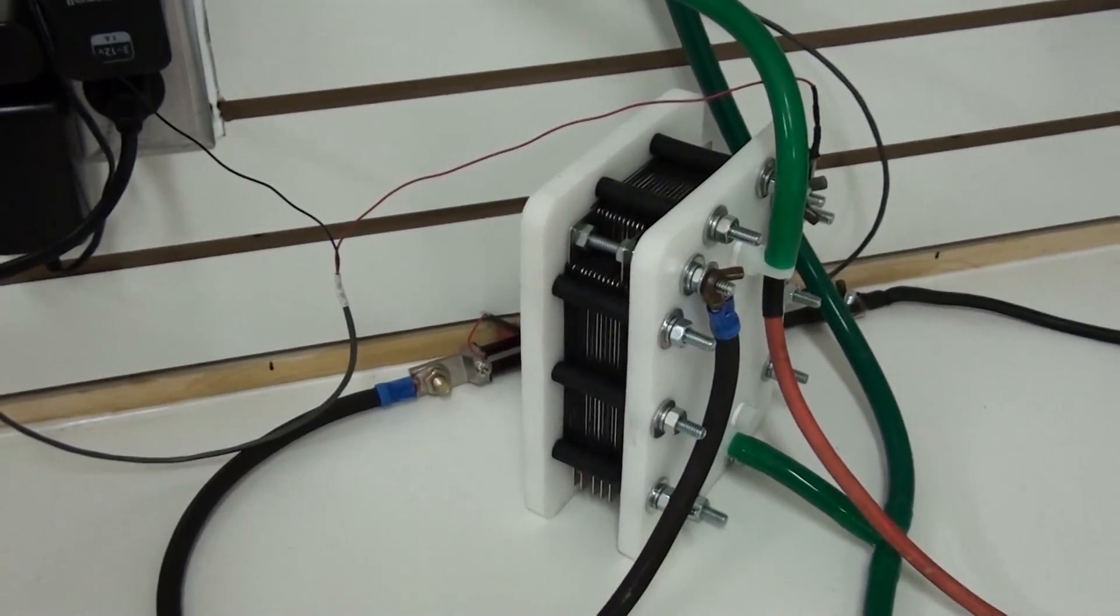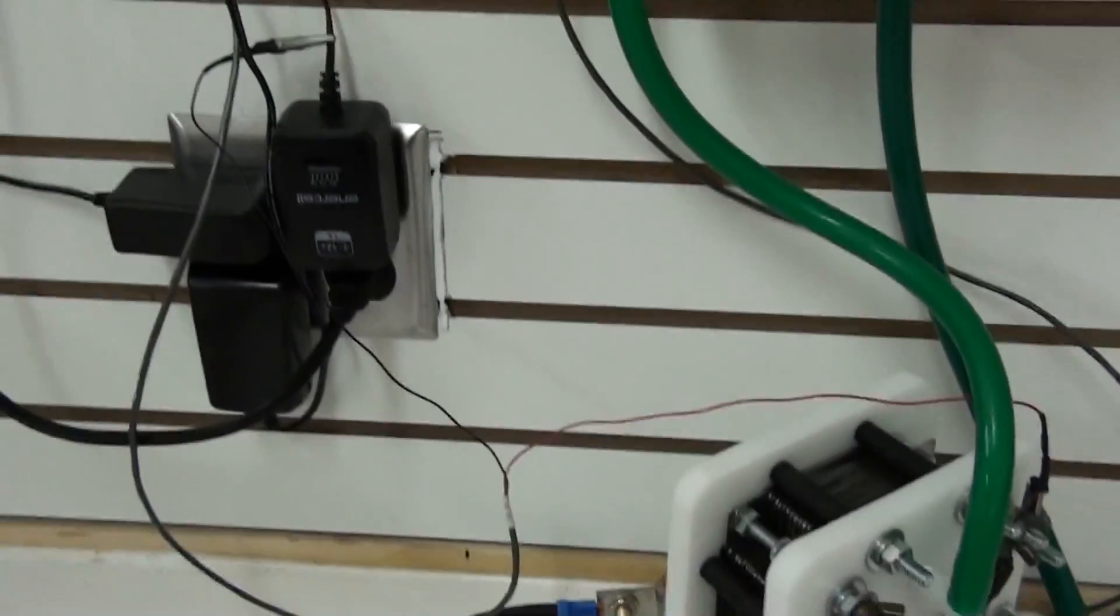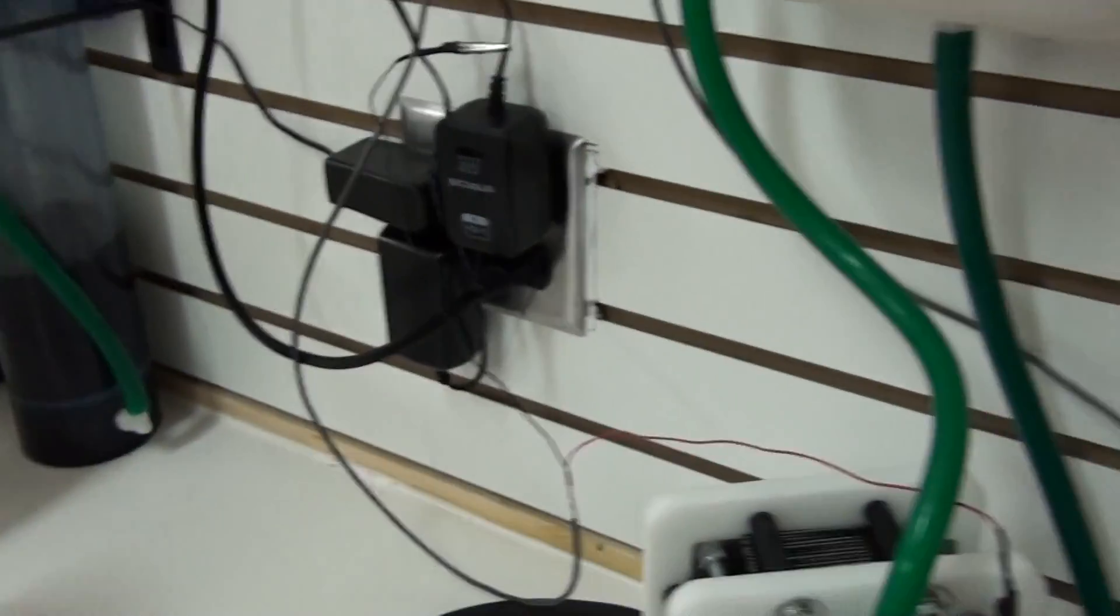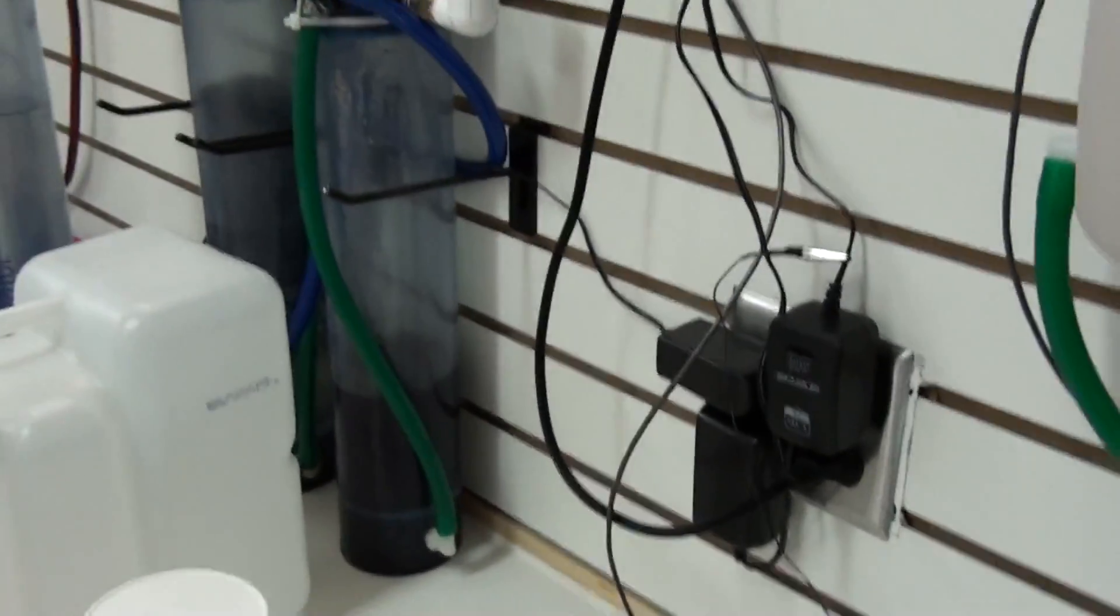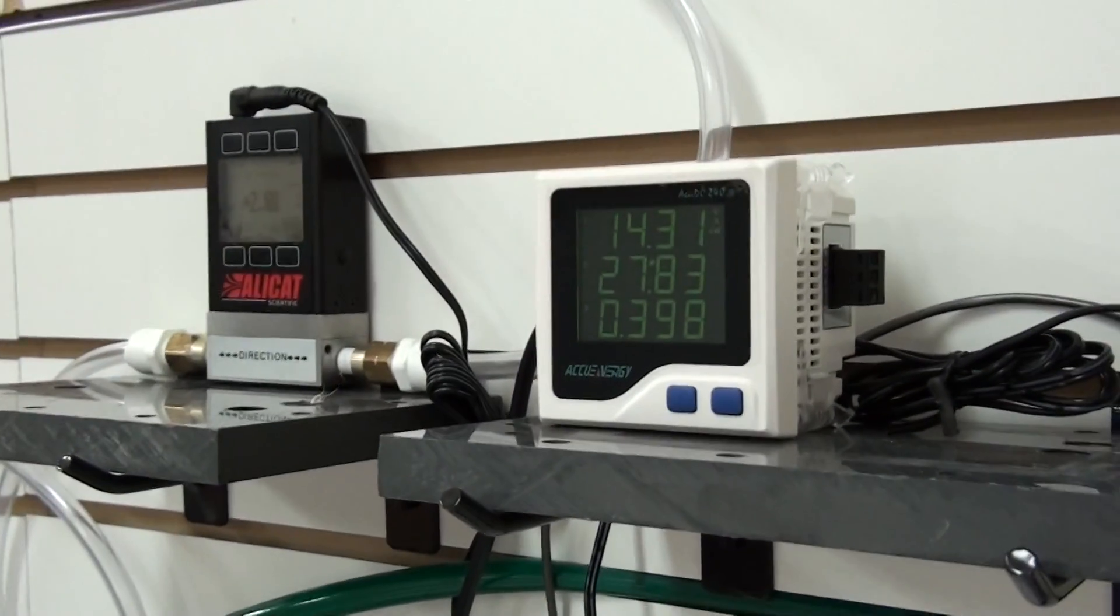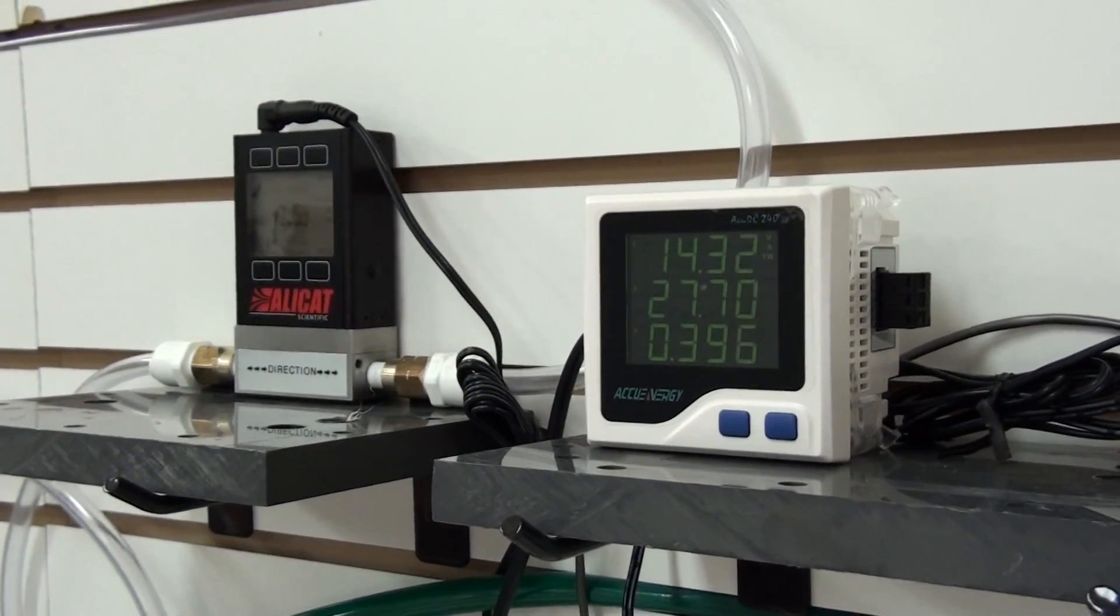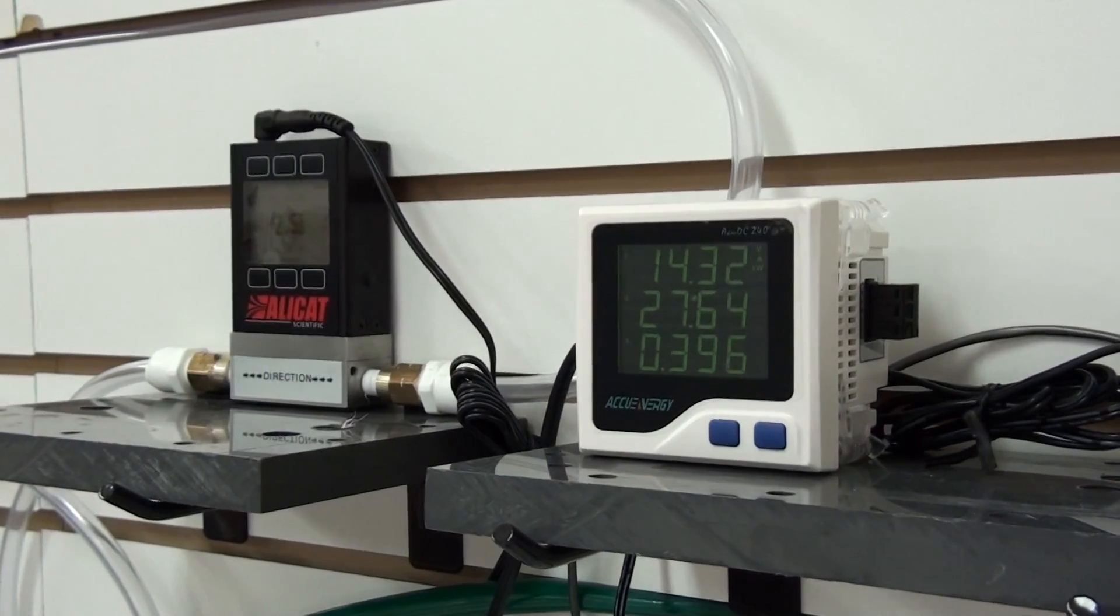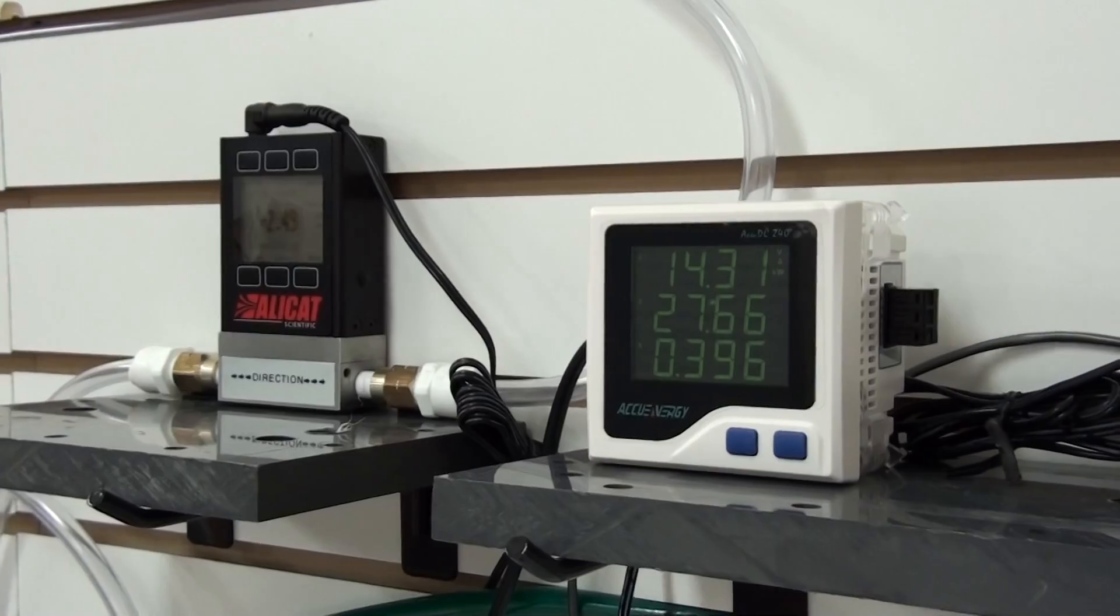Now this cell will run at a higher output. I'm going to demonstrate that right now. Right now we're running at 14.3 volts and about 27.5 amps. That's 396 watts.